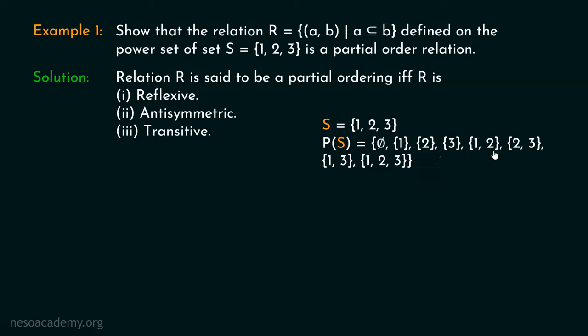Let's check the reflexivity property. According to reflexivity, A must be a subset of A, where A belongs to the power set of S. This is true because every element is a subset of itself. Anti-symmetric property says: if A is a subset of B and B is a subset of A, then A equals B — this is also true. According to transitivity, if A is a subset of B and B is a subset of C, then A must be a subset of C — this is also true. So it is clear that this relation is a partial order relation.